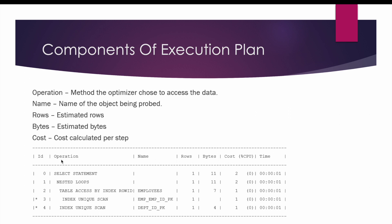The first component is operation — it indicates the method the optimizer chooses to access the data. For example, operation number three is index unique scan, which means the optimizer is making use of the index emp_empid_pk to access the employees table.